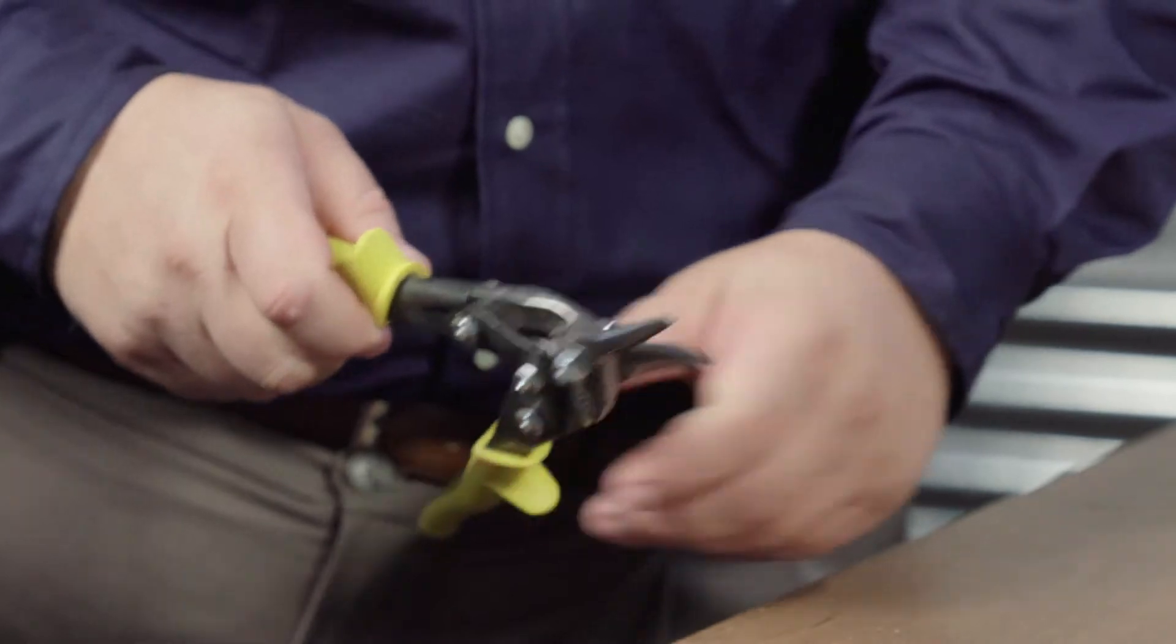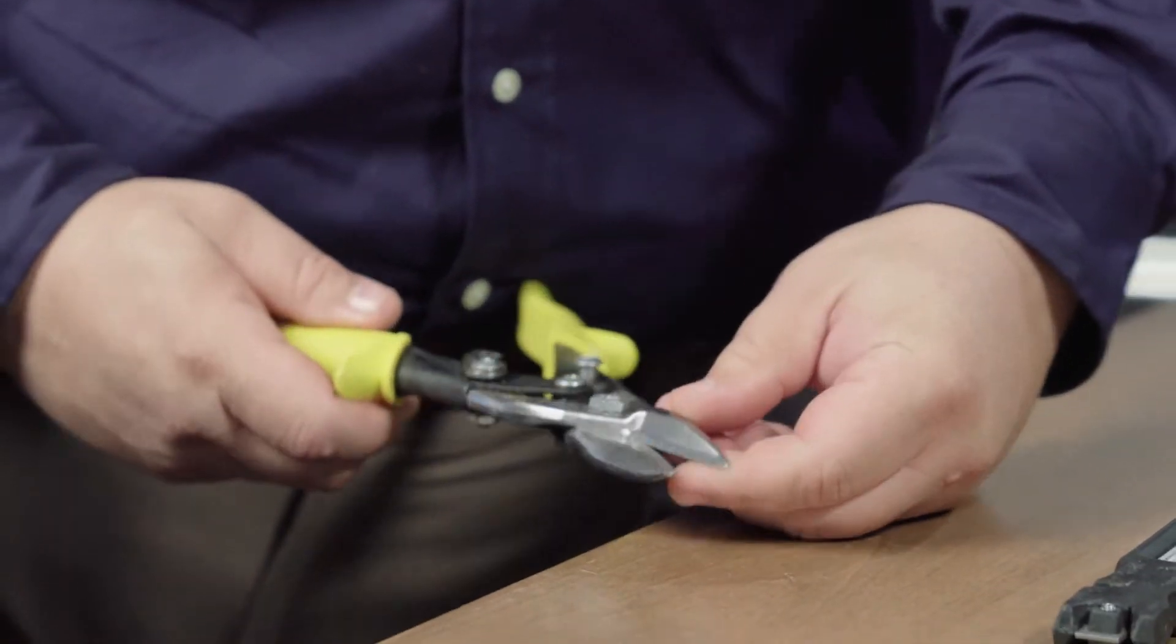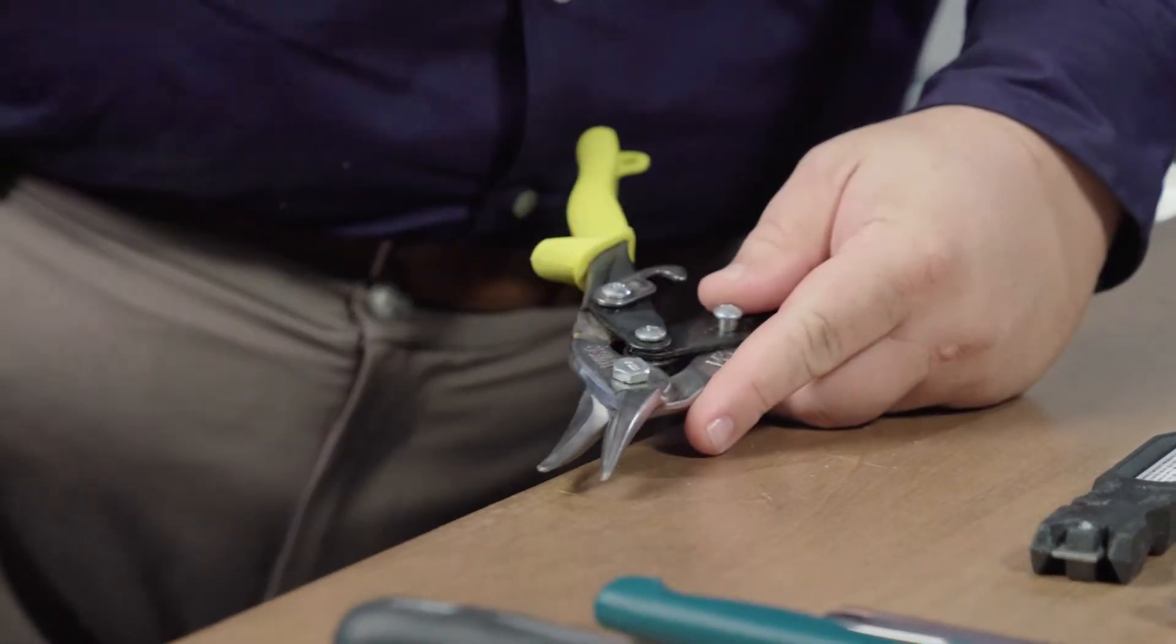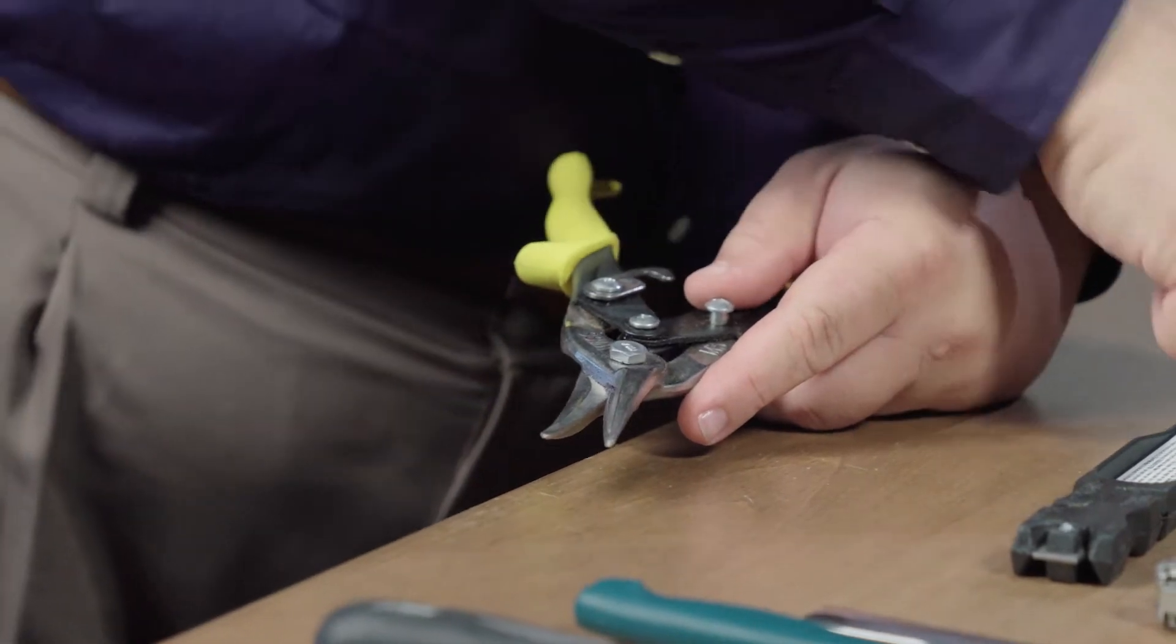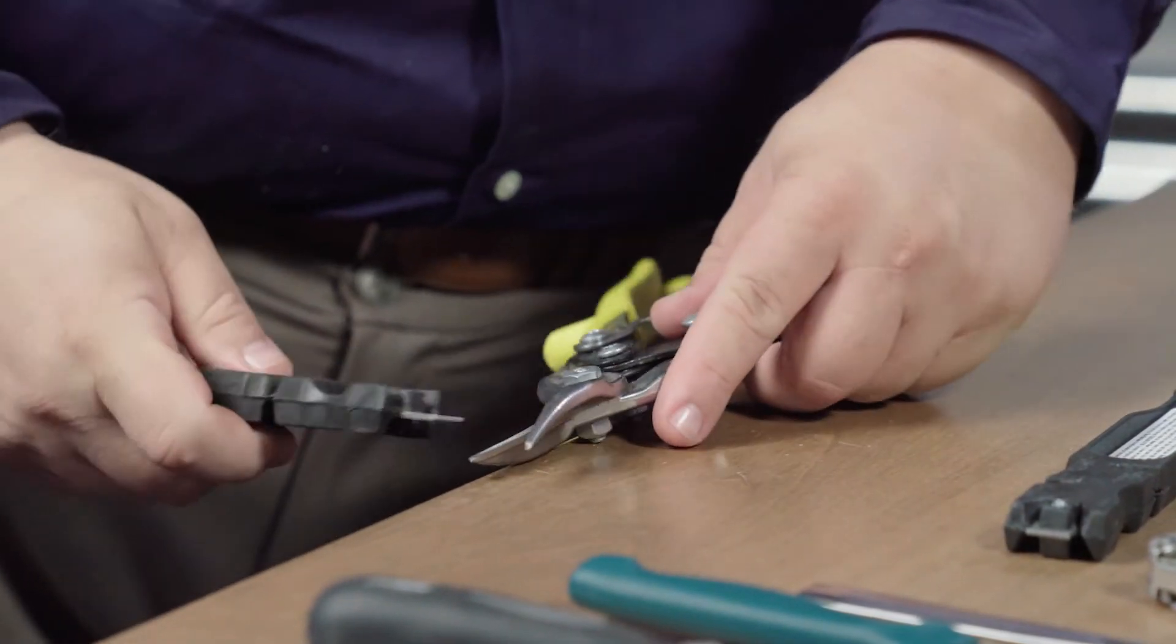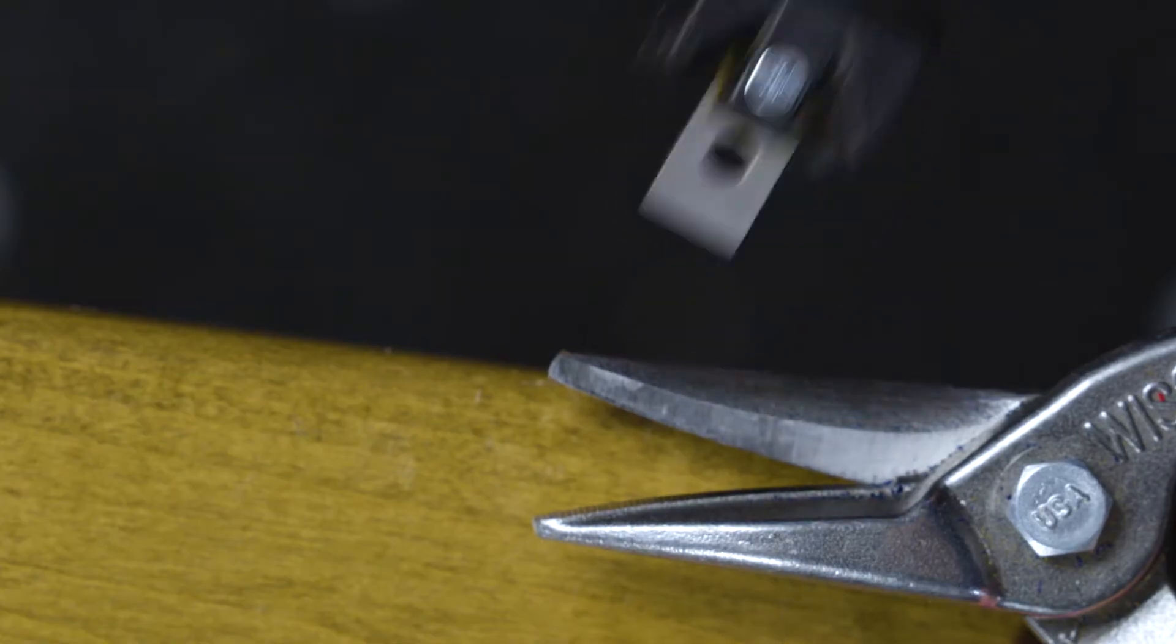Well, we're going to find out. We're going to open these up. Now, snips are designed to literally snip steel. So depending, we're going to see if the sharpening insert here is as hard or harder than the steel here.